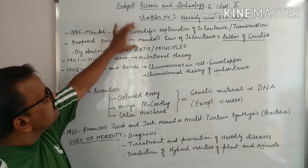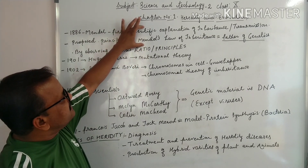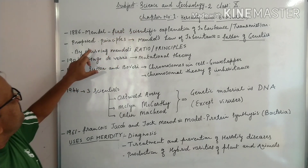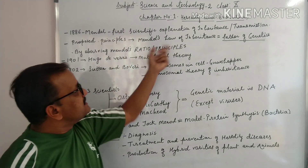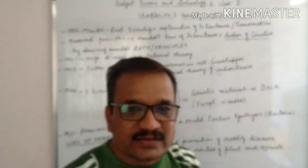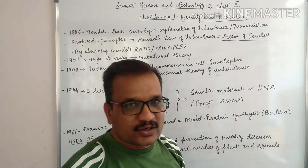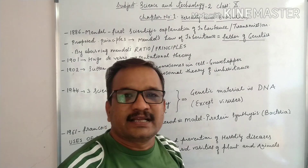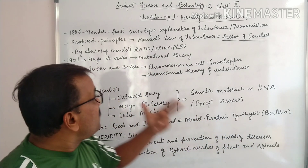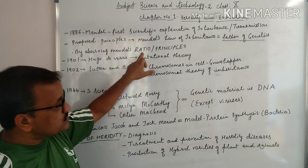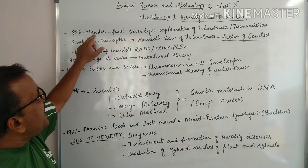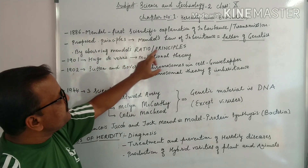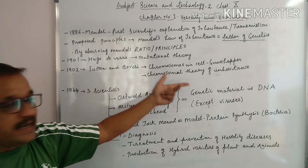Mendel carried out a number of principles and derived ratios which he studied on the pea plant. In 9th standard you must have studied monohybrid cross, dihybrid cross, the 3:1 ratio, and the 9:3:3:1 ratio. All these ratios and different principles were put forth by Mendel.